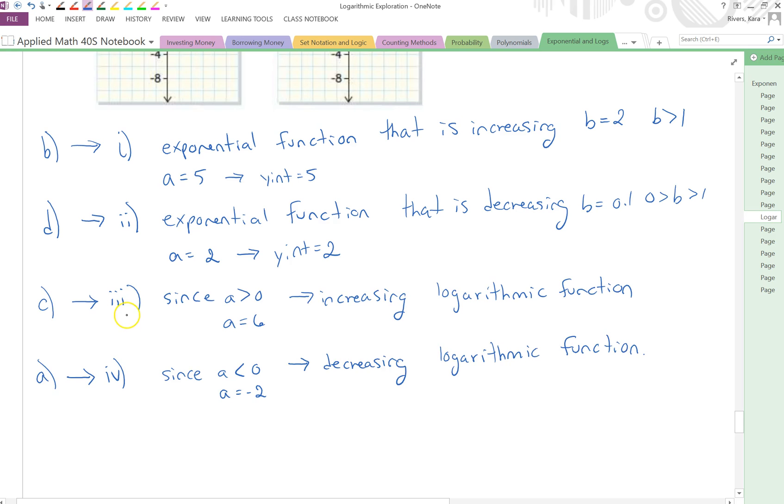Alright, let's write out the explanation. So graph C matches equation 3 because A is greater than 0. It's an increasing logarithmic function. Graph A matches equation 4 since A is less than 0. It's a decreasing logarithmic function.